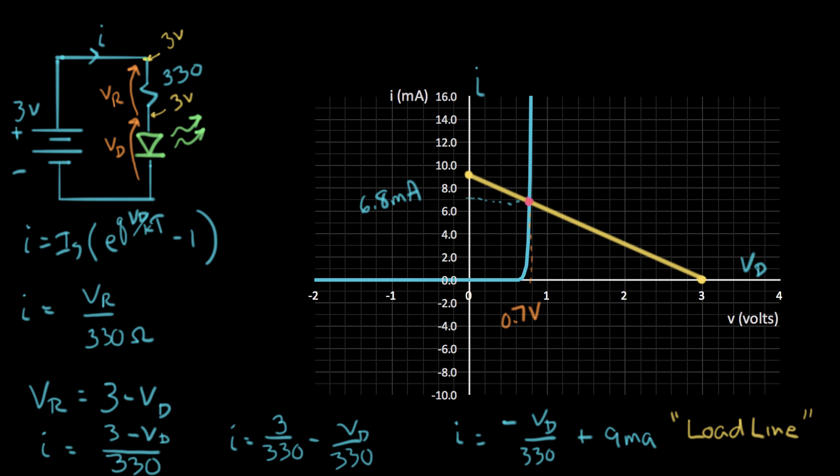So now we actually just solved our circuit using a graphical technique. And what that says is, let me erase this a bit to clean it up. Let me take out these two things here. That was just the resistor load line that we were talking about. And now for our solution, we have I equals 6.8 milliamps. And V diode equals about 0.7 volts. So that's how you do a graphical solution with a diode.